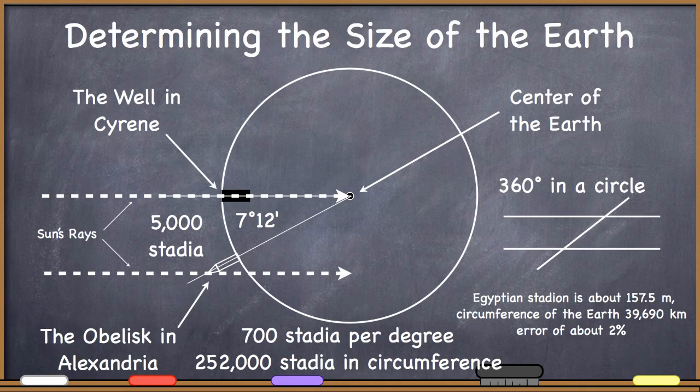Eratosthenes calculated the circumference of the earth to be about 252,000 stadia. An Egyptian stadion is about 157.5 meters, putting Eratosthenes' calculation at 39,690 kilometers, an error of about 2%. Pretty amazing.